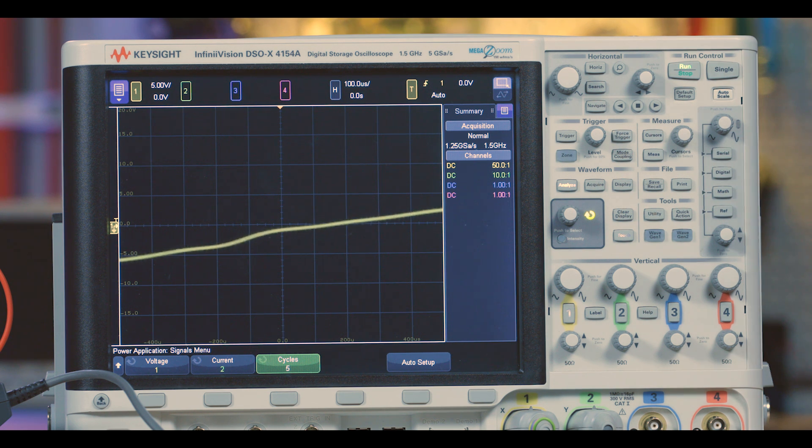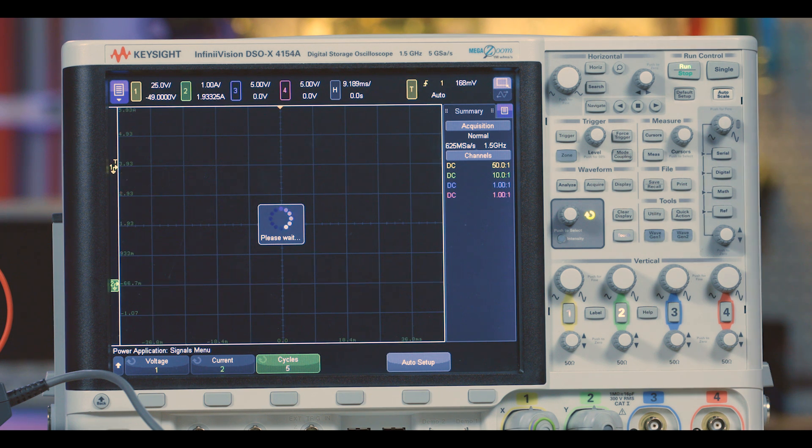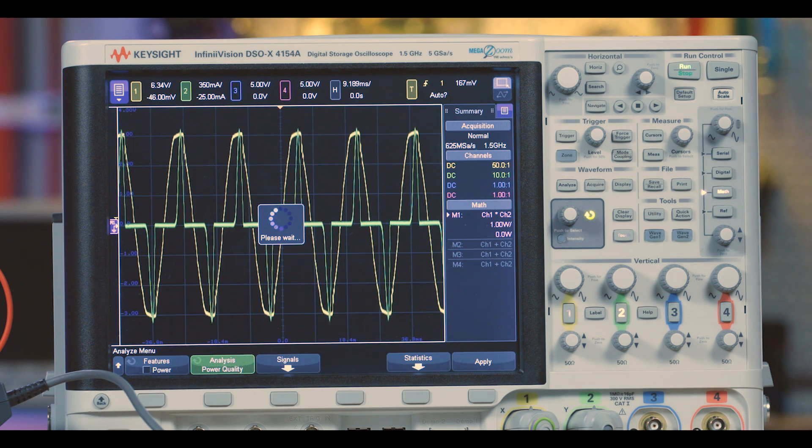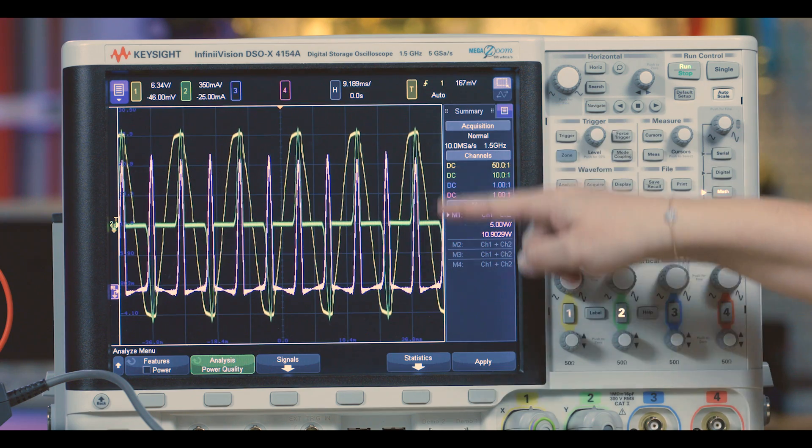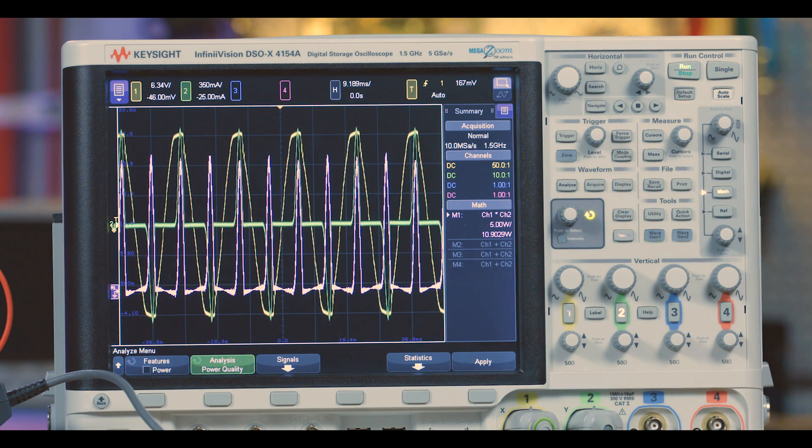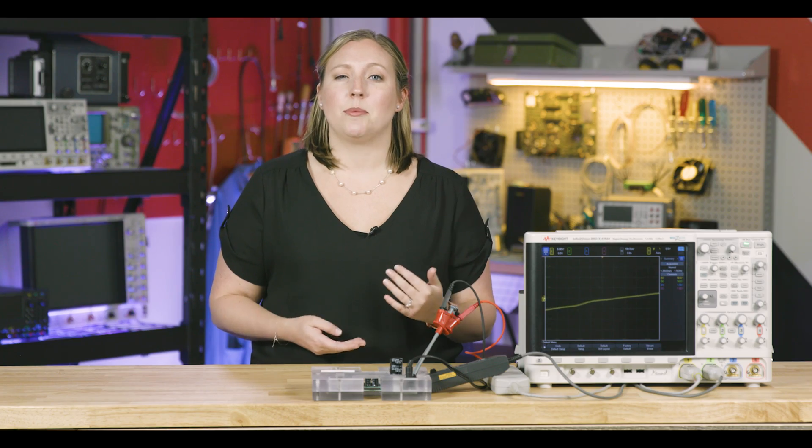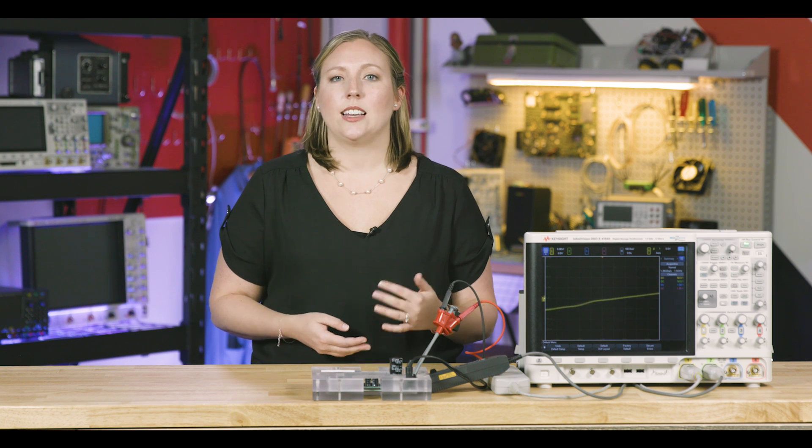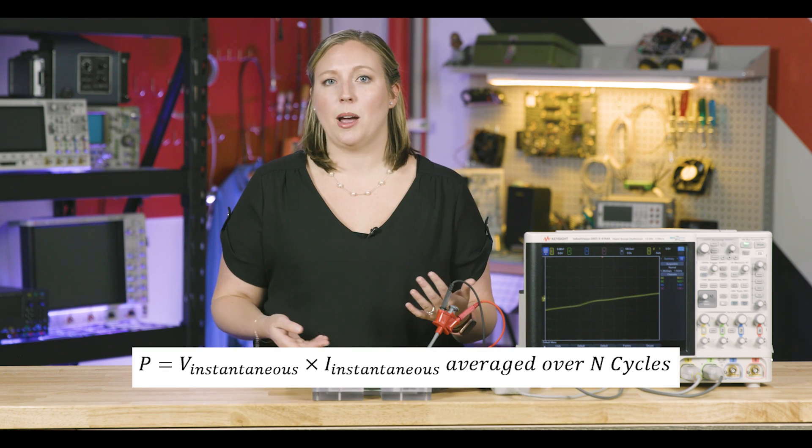Now I can simply select auto setup. Since I'm using a power application, the scope automatically scales the signal properly to take advantage of the full bits on the oscilloscope for accurate measurements and sets up the waveform math. In this case, of course, it's V times I to get instantaneous power.